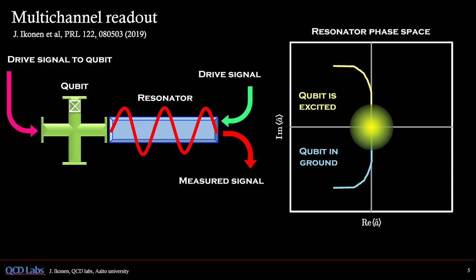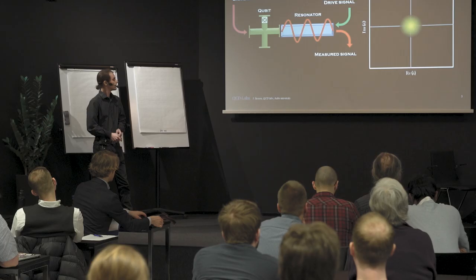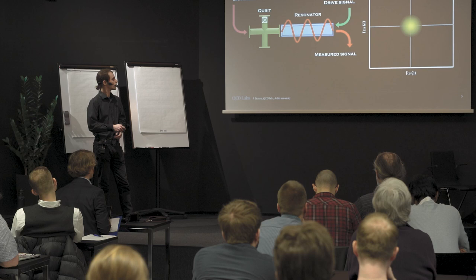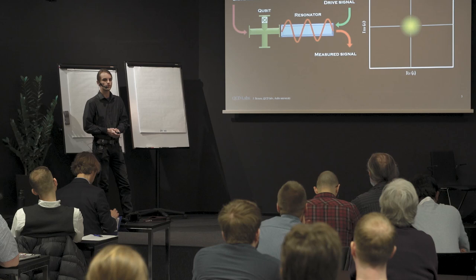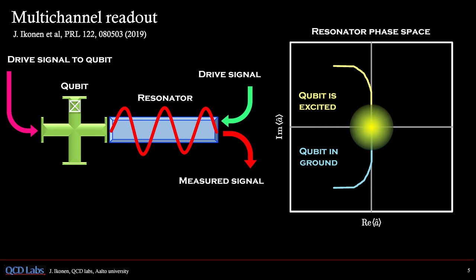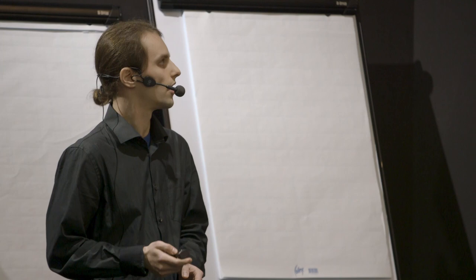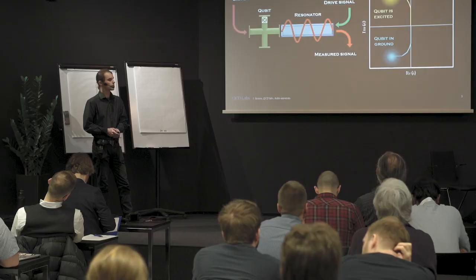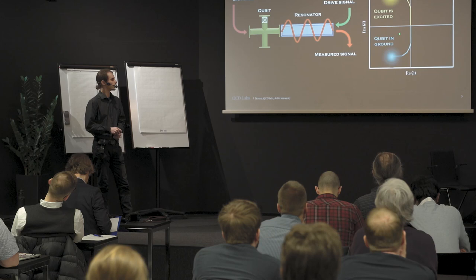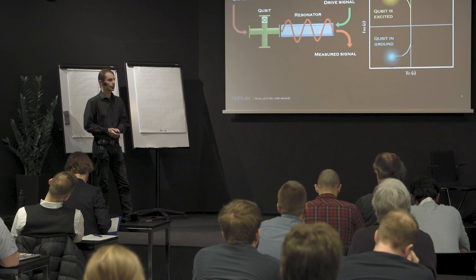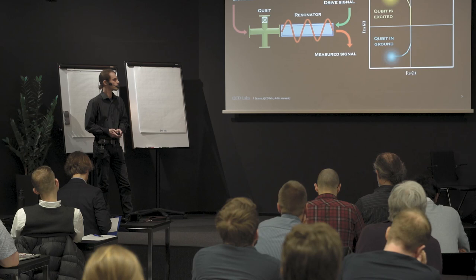Basically the only difference is that we add, in addition to the normal driving signal, a driving signal directly to the qubit. It has to be in the correct phase, frequency, and amplitude. But when you do it correctly, you will see that these distributions instead behave differently — so from the very beginning of the measurement, the distributions start to advance in different directions, and we can immediately gather useful information about the qubit state.